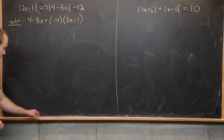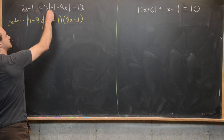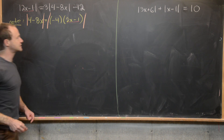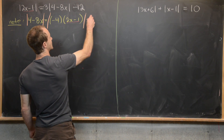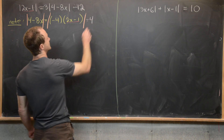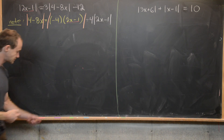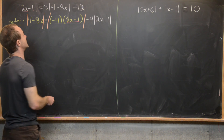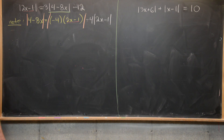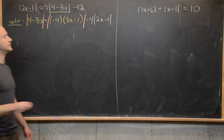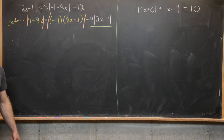The next thing to see is that we can take the absolute value of this expression and the absolute value will cancel this minus 4, giving us a positive 4 times the absolute value of 2x minus 1. So the absolute value of 4 minus 8x equals 4 times the absolute value of 2x minus 1.